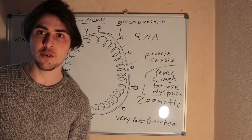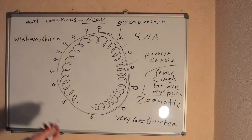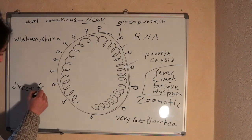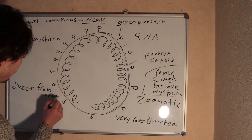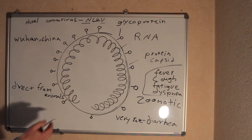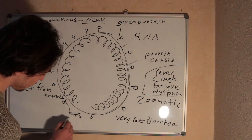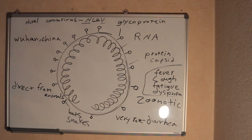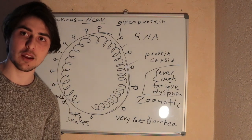The transmission of this virus is most commonly from animals, by eating contaminated animals such as bats and snakes. And it transmits from human to human through coughs and sneezes.